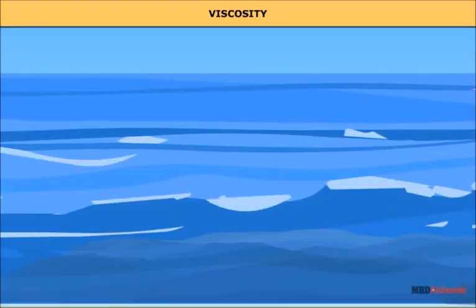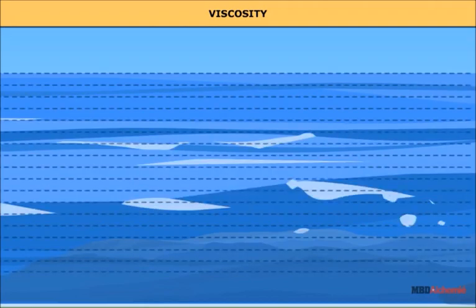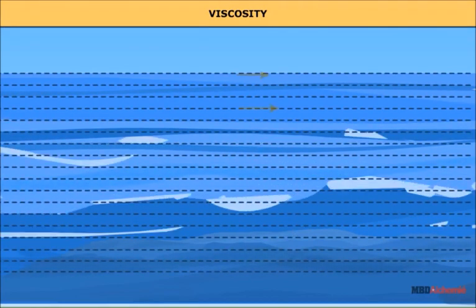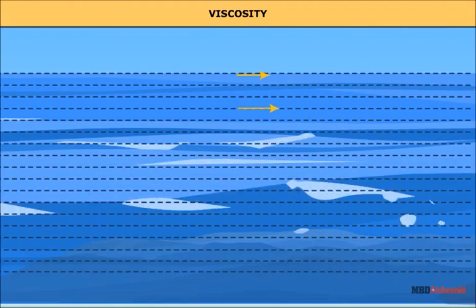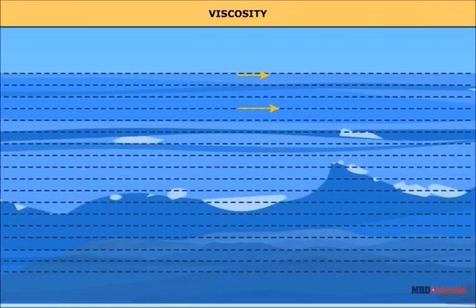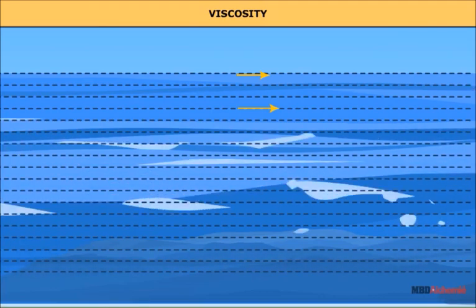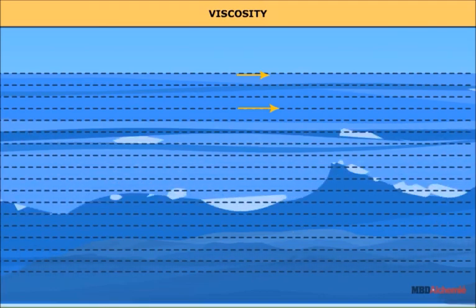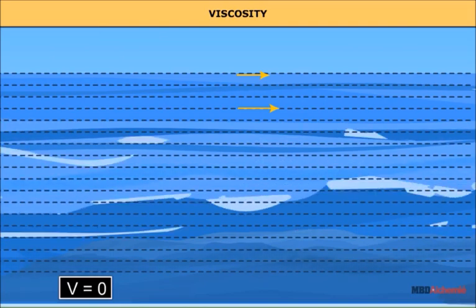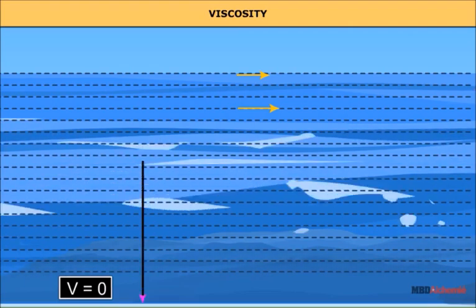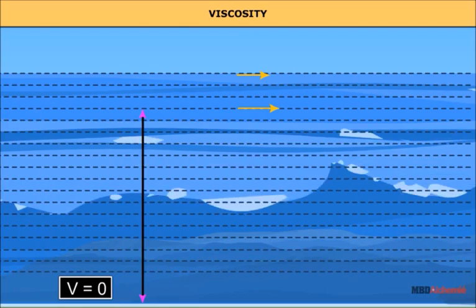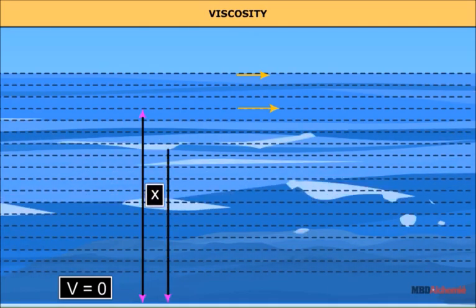The liquid flowing over a horizontal solid surface is assumed to be in the form of parallel layers. The velocity of each layer increases as we move up from the bottom to the top. The layer at the bottom is assumed to be at rest, or zero velocity, and the layer at the top is the fastest moving layer with maximum velocity. We now consider two layers of liquid at distances X and X plus dX moving with velocities V and V plus dV respectively.